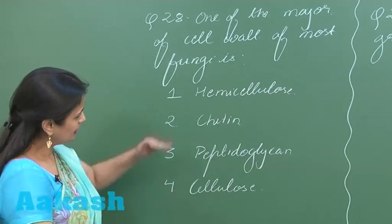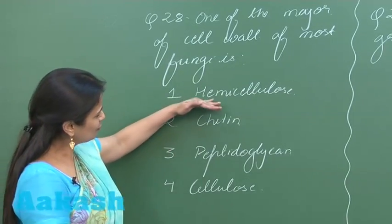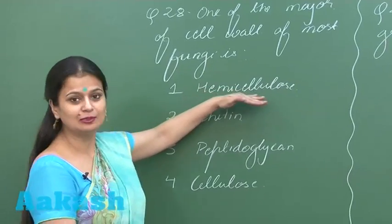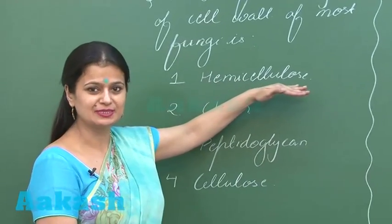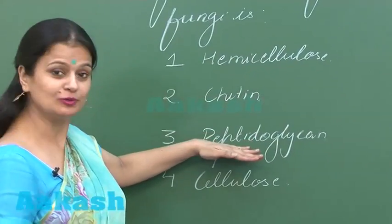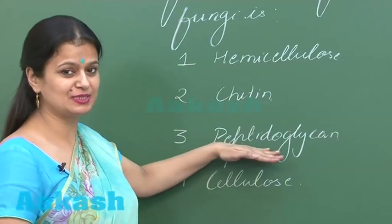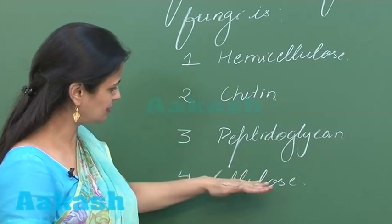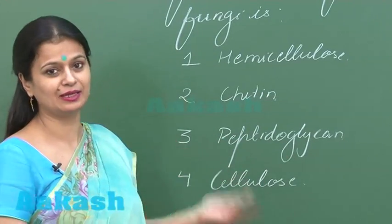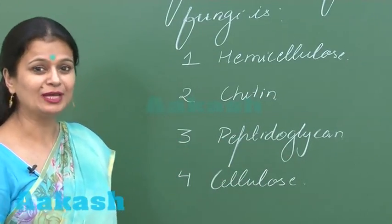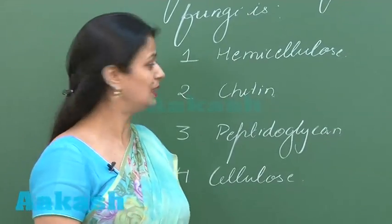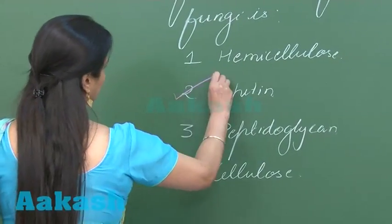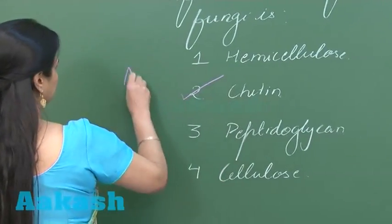Looking at the other options: hemicellulose is present in plants, peptidoglycan is present in the cell wall of bacteria, and cellulose is again one of the main components in plants. So the right option here is option number 2.